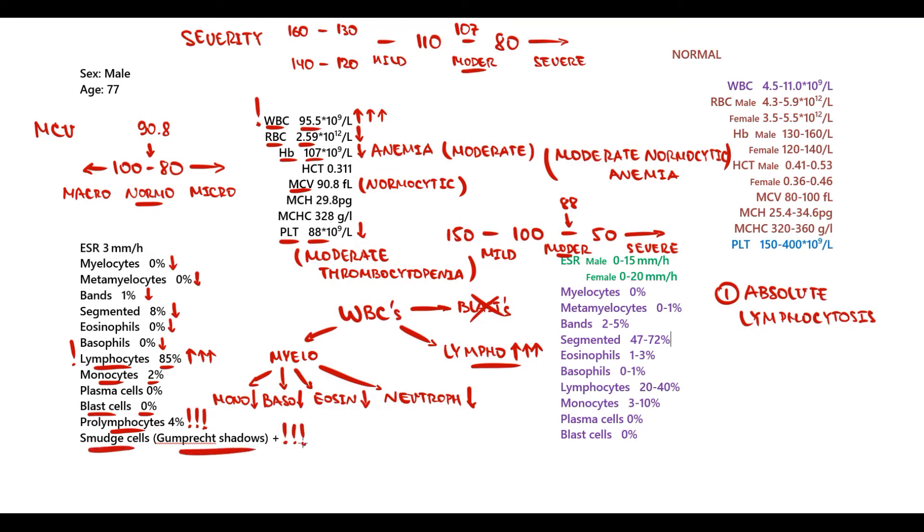There are also smudge cells, or Gumprecht shadows. These cells are basically very old lymphocytes that cannot die. Because they cannot die, and time has no mercy, they just circulate in this old decrepit state in the bloodstream and become the shadows of themselves.